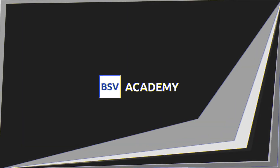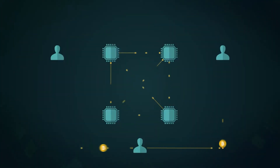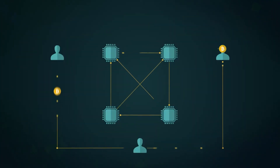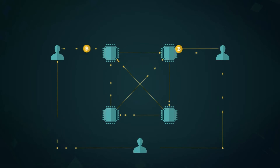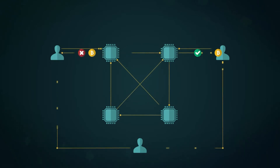Traditionally, a centralized payment authority routes all transactions through itself, thereby ensuring that a transaction can only be made once. Bitcoin instead solves this in a distributed manner by using what is called the first seen rule.